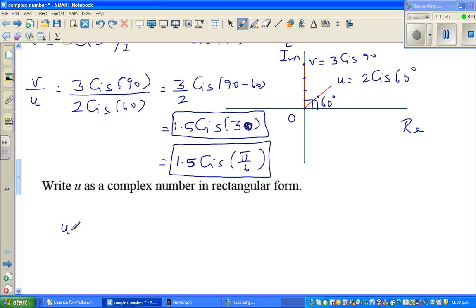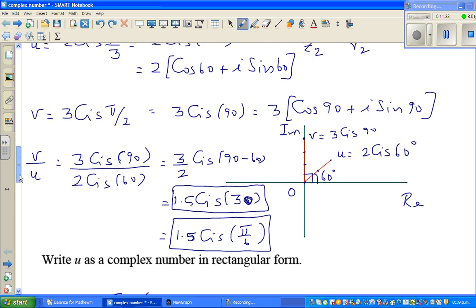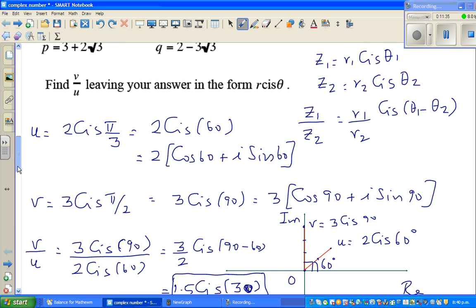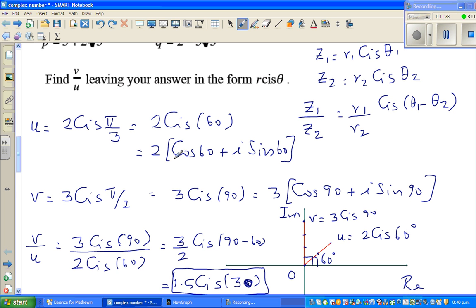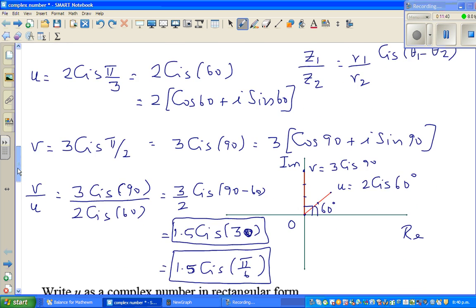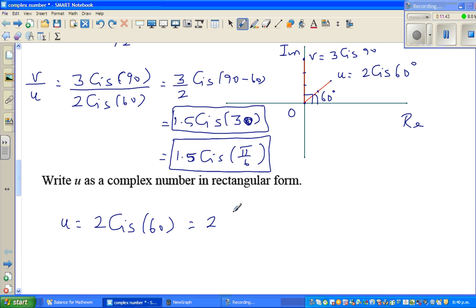Now u, we know, is 2 cis 60. Now the question is, we have already done that, I think so. This is in the rectangular form. So u, we know is, we have written like this. So u is nothing but cos 60 plus i sine 60. So this is 2 times cos 60 plus 2i sine 60. Now we can do this on the calculator. But you should know how to do without the calculator.